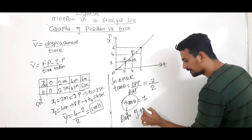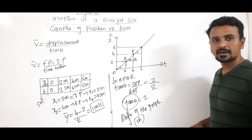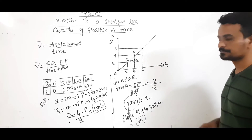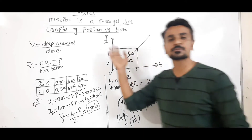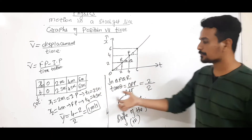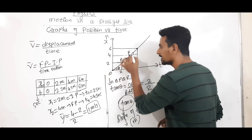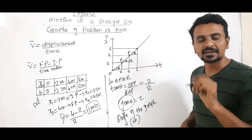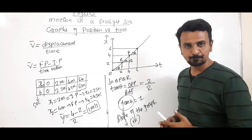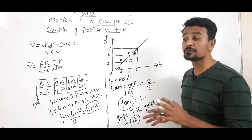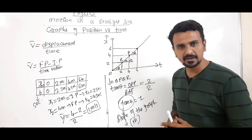We can conclude that the slope of the position-time graph x-t, which is tan theta, will give us average velocity. Whether you use this triangle or another, the answer remains the same. The slope of the position-time graph equals average velocity, and slope is known as tan theta.